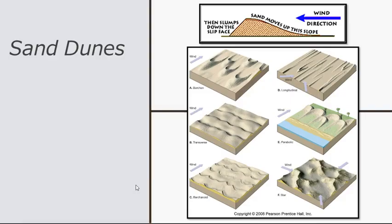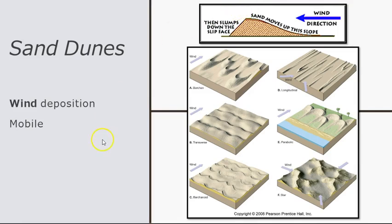Sand dunes are the most prominent landforms constructed by wind deposition. Like sediment deposited in stream channels, sand on sand dunes will continue to move so long as there is wind and a lack of vegetation to anchor the sediment. Sand grains roll and skip up the windward, wind-facing side of the dune, and are redeposited on the leeward side. This forms cross-bedding, a characteristic of wind-deposited sediment. When the leeward side exceeds the angle of repose for sand, it fails as a sand slump.